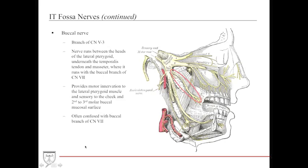The buccal nerve is a branch of V3. It runs behind the heads of the lateral pterygoid, underneath the temporalis and masseter muscles, and eventually runs with the buccal branch of cranial nerve seven. It provides motor innervation to the lateral pterygoid muscle and sensory innervation to the cheek and the buccal mucosal surface of the second and third molars. It is often confused with the buccal branch of cranial nerve seven, but has no function in facial expression.